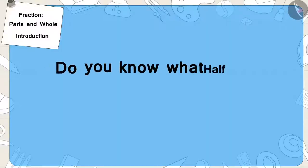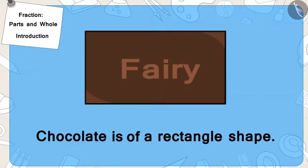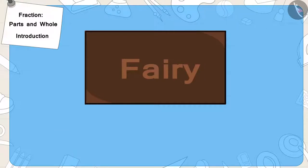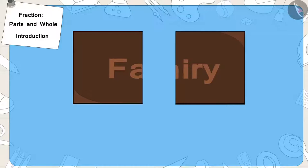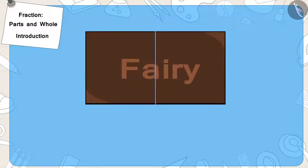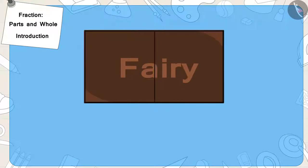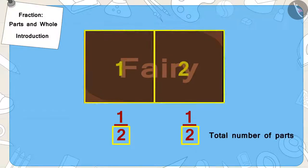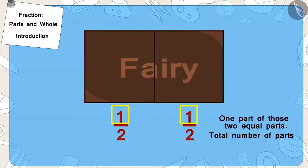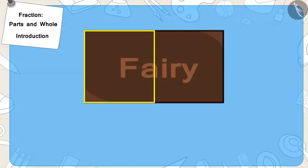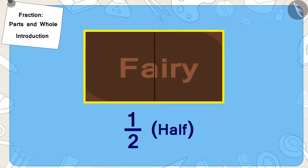Children, do you know what half is? Suppose Bunny's chocolate is of such a rectangle shape. Now, if we divide it into two equal parts, like this — this part is one part of these two equal parts. We can also write it as a fraction in this way. Here, two is the total number of parts and one is one part of those two equal parts. We also call this half of this whole chocolate.